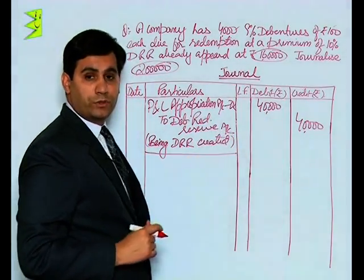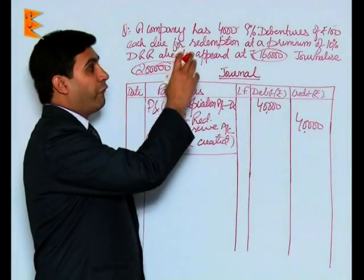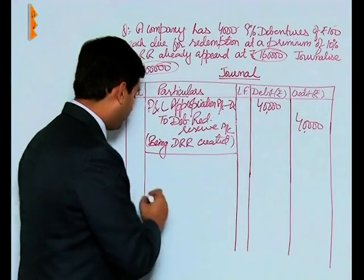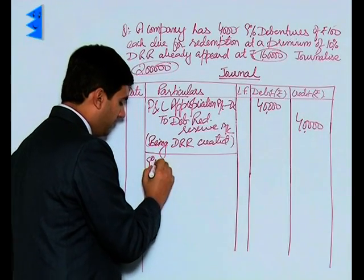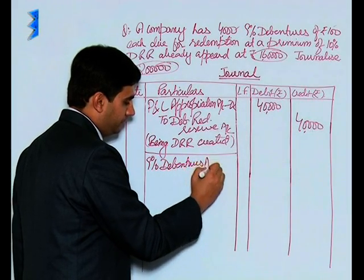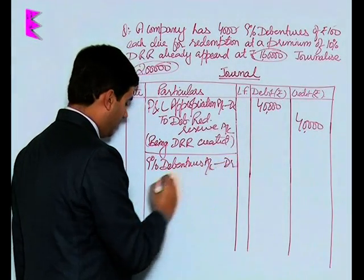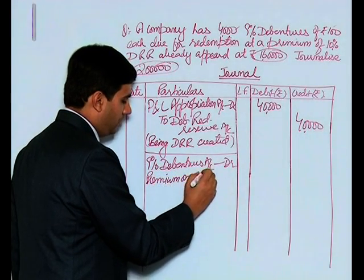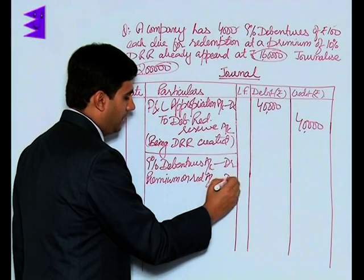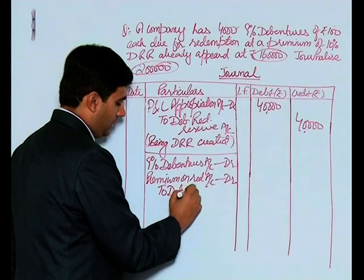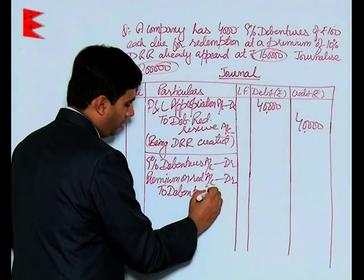Now students, the next entry is for the amount becoming due to debenture holders. The entry would be 9% debentures account debited, premium on redemption account debited to debenture holders account.